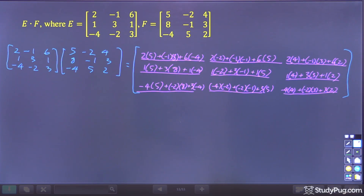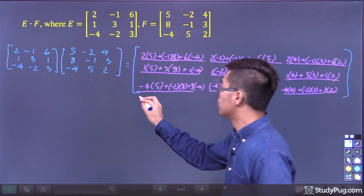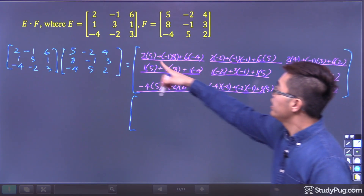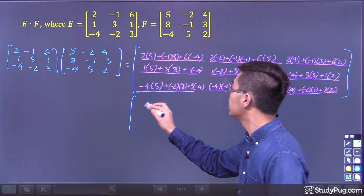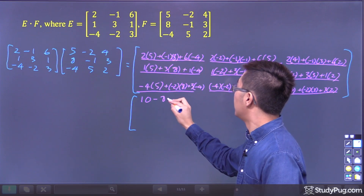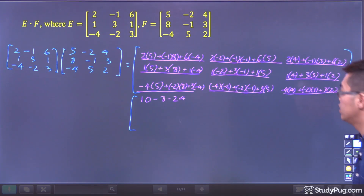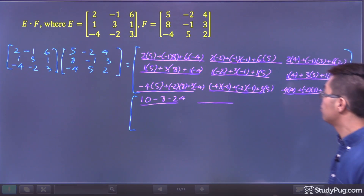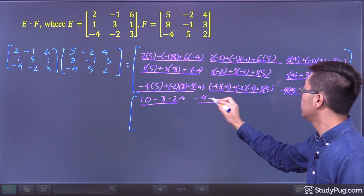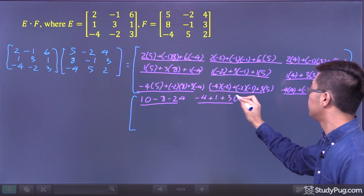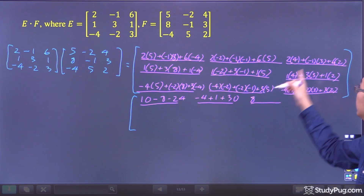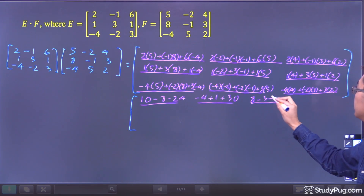Now we calculate all the results. The first entry: 2 times 5 is 10, so we get 10 minus 8 minus 24. The second entry: 2 times negative 2 is negative 4, plus 1, plus 30. The third entry: 2 times 4 is 8, minus 3, plus 12.